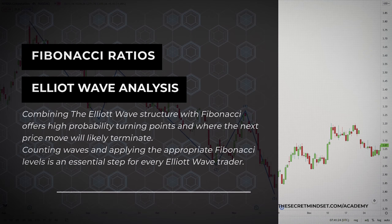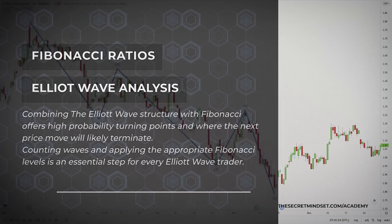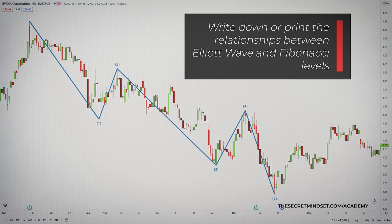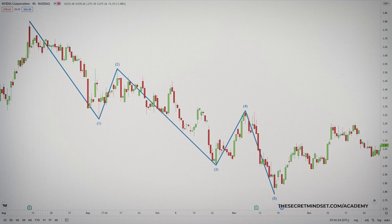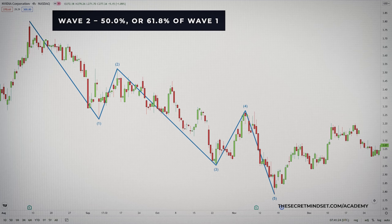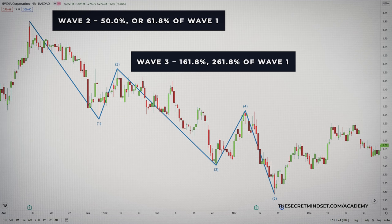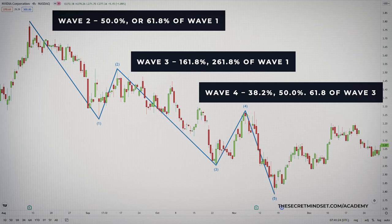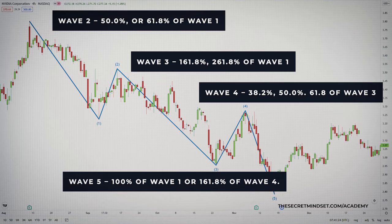The application of Fibonacci ratios is an integral part of Elliott wave analysis. Combining the Elliott wave structure with Fibonacci offers high probability turning points and where the next price move will likely terminate. Therefore, counting waves and applying the appropriate Fibonacci levels is an essential step for every Elliott wave trader. Here are the common relationships between Elliott waves and Fibonacci levels. It's important to write down or print these levels so that you know how price action is most likely to play out. Wave 2 is 50% or 61% of Wave 1. Wave 3 is 161.8% or 261.8% of Wave 1. Wave 4 is 38.2%, 50%, or 61% of Wave 3. And Wave 5 is 100% of Wave 1 or 161.8% of Wave 4.